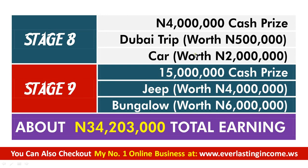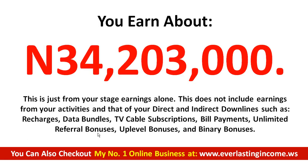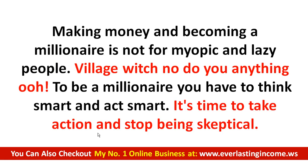Completing stage seven earns over 2 million naira and one year free subscription. Completing stage eight earns 2 million naira cash, a Dubai trip worth 500,000 naira. Completing stage nine — the last stage — earns 50 million naira cash, a jeep worth 4 million naira, and a bungalow worth 6 million naira — making a total of about 34 million naira just for the stage bonuses. This does not include the passive consistent daily income.